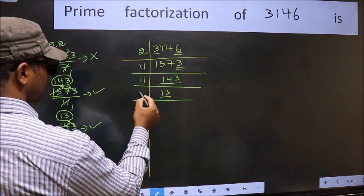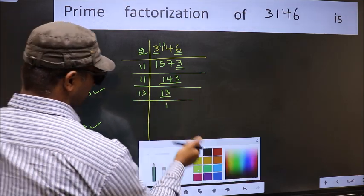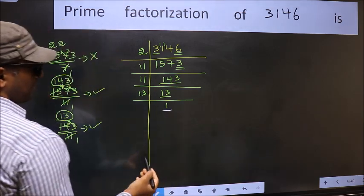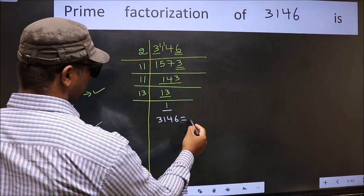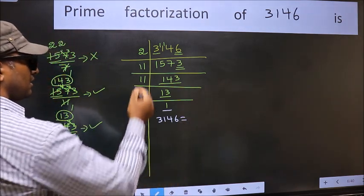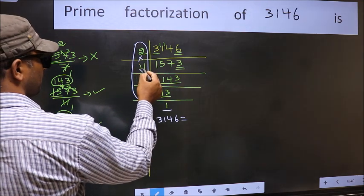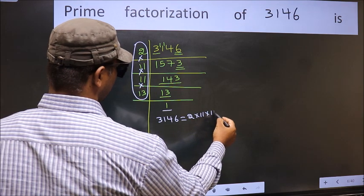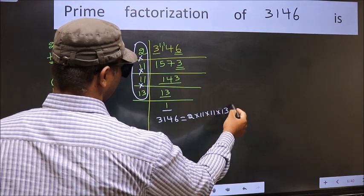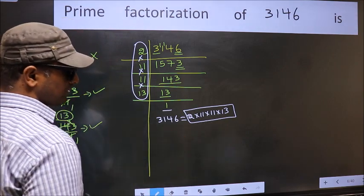Now we have 13. 13 is a prime number. So 13, 1's 13. So we got 1 here. So the prime factorization of 3146 is the product of these numbers. That is 2 into 11 into 11 into 13. This is the prime factorization of 3146.